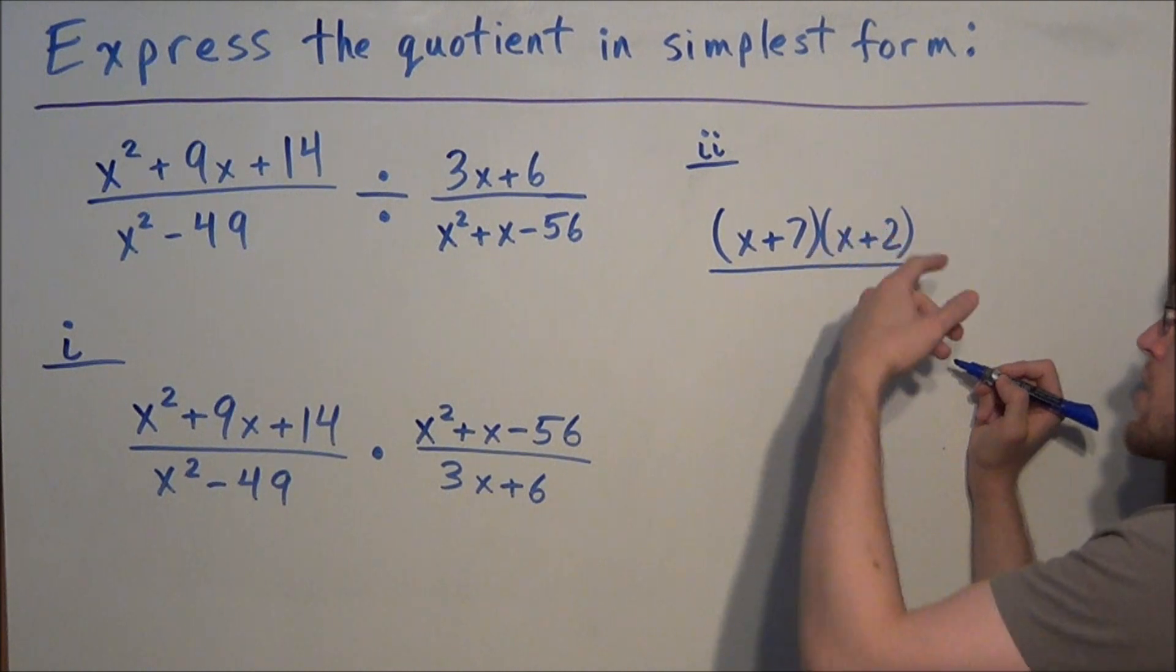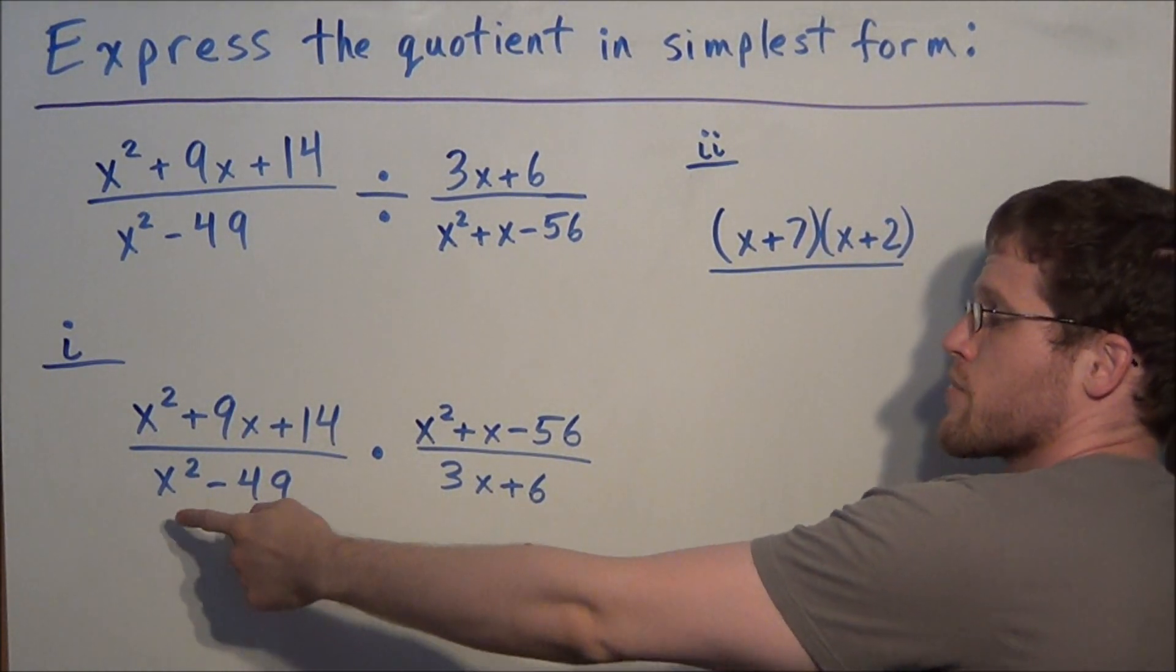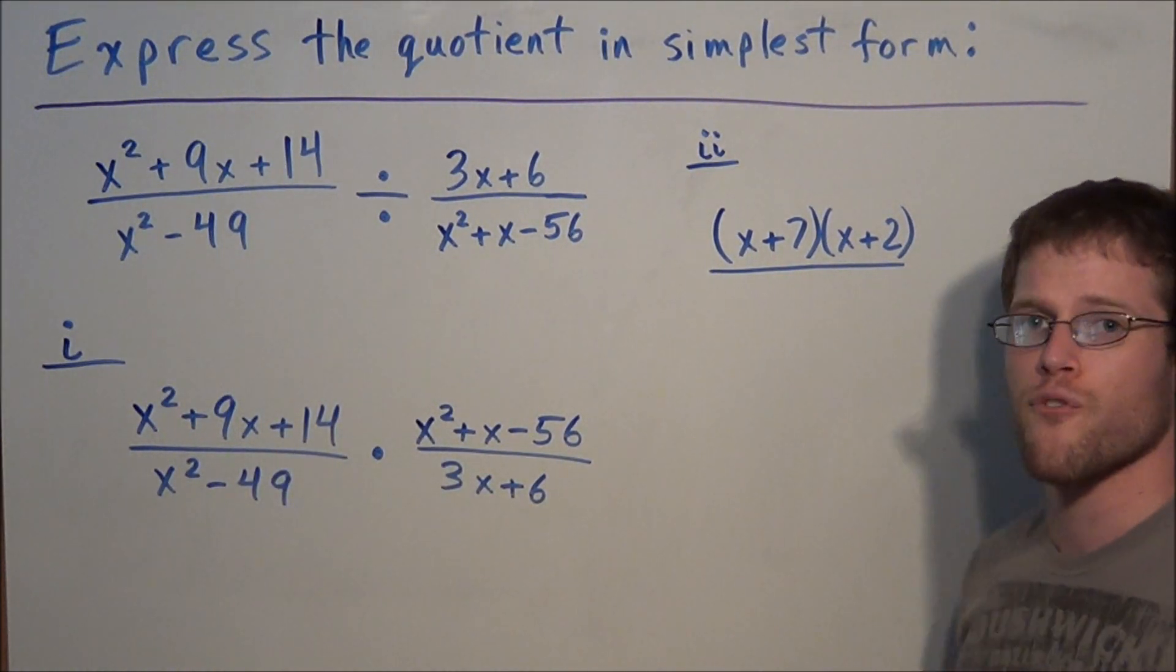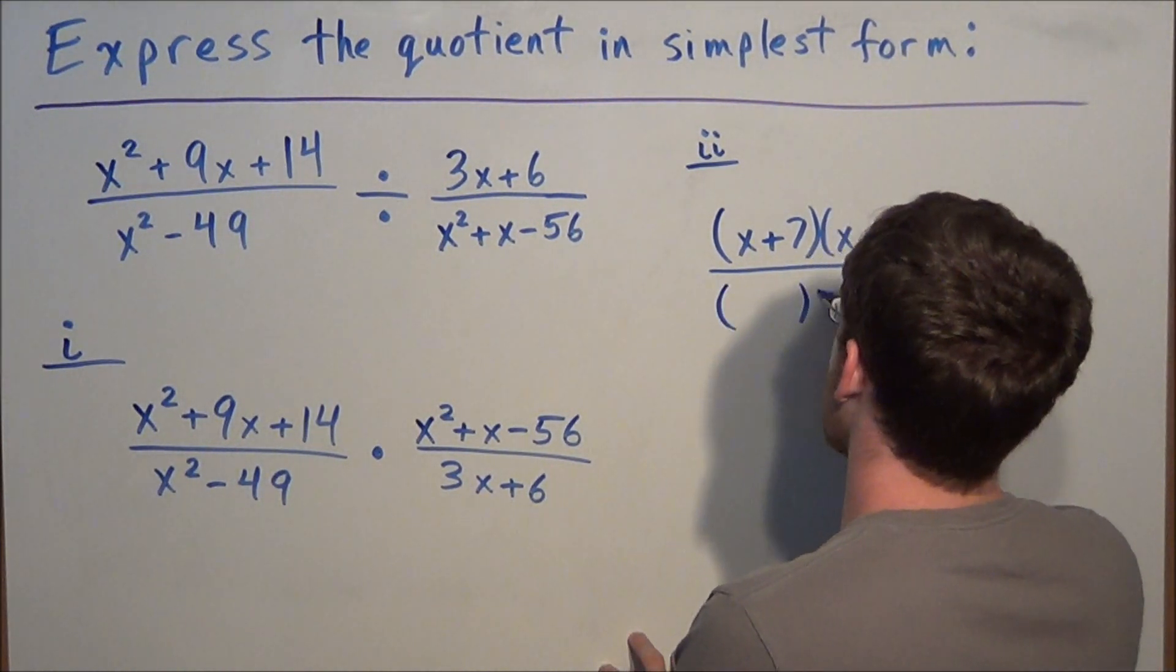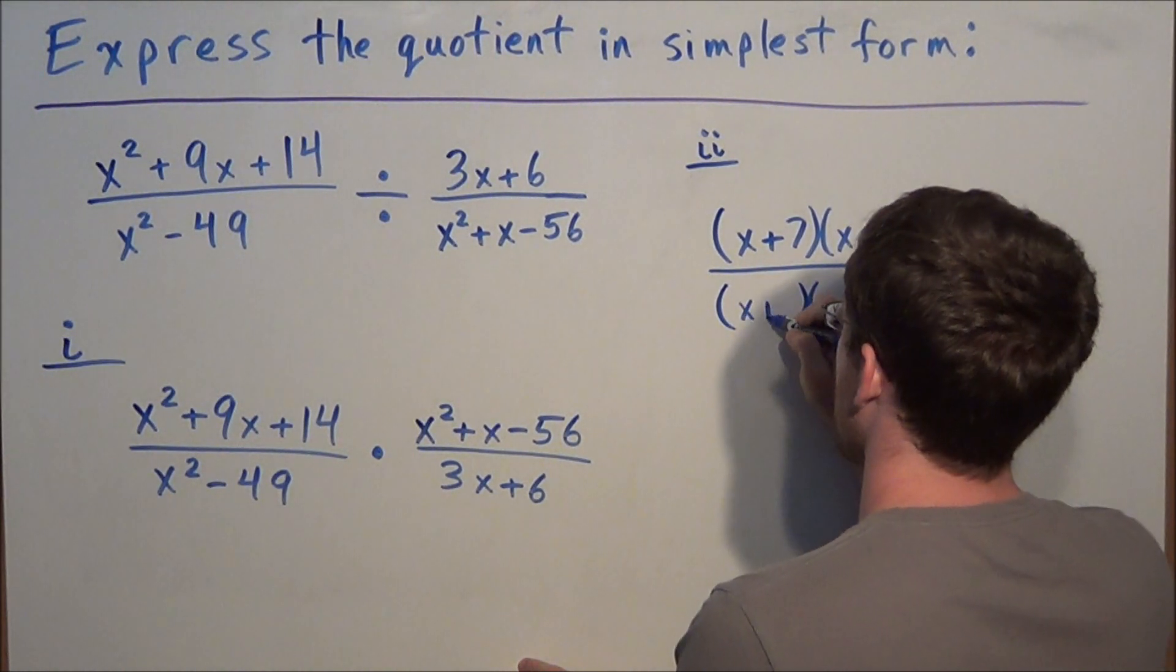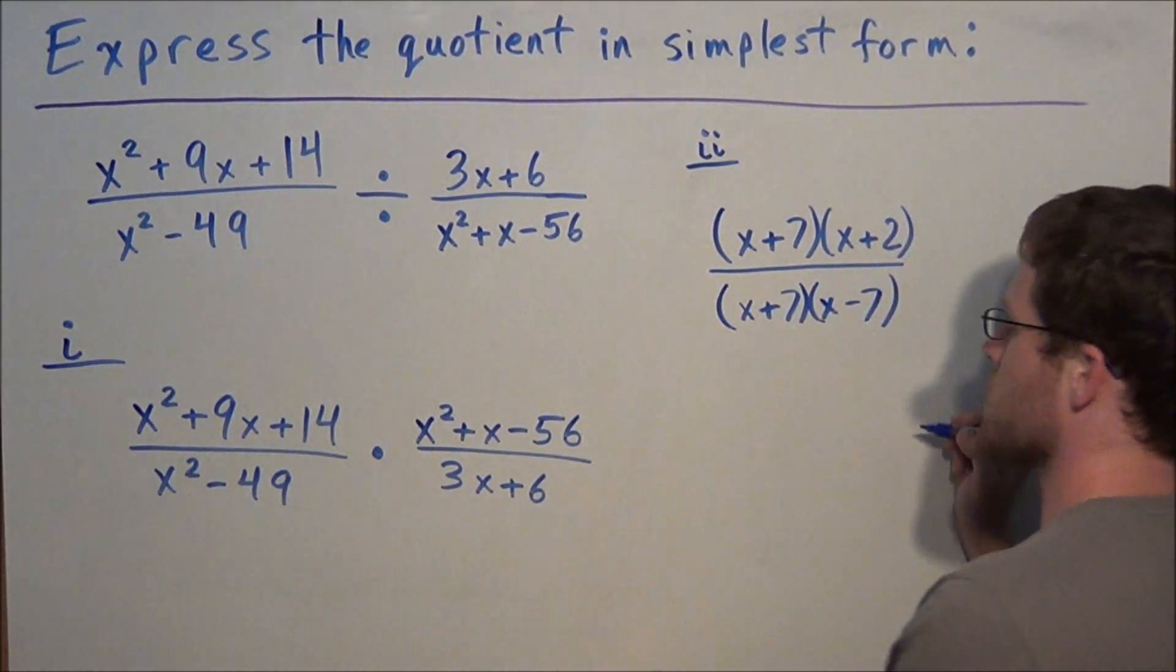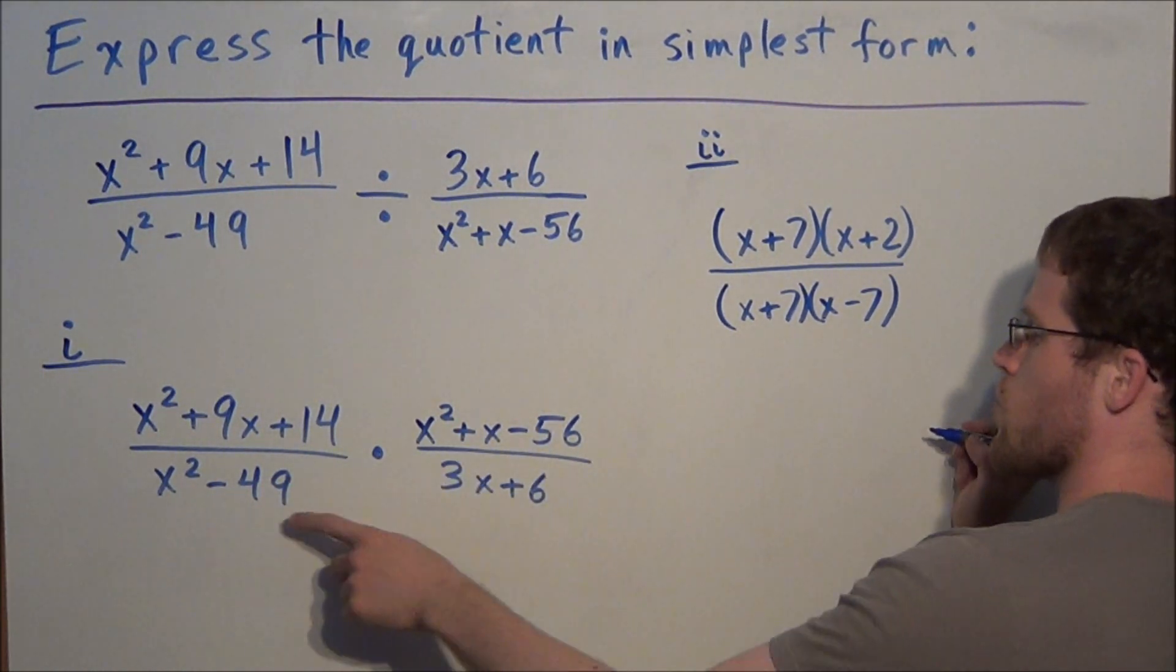Now this was the technique of factoring a trinomial but you'll also need to know how to factor the difference of perfect squares. When you see something like x squared minus 49, the fact that 49 is a perfect square, something should go off in your head. To factor this expression, we have x plus 7, x minus 7. All we're doing is taking the square root of x squared and the square root of 49.